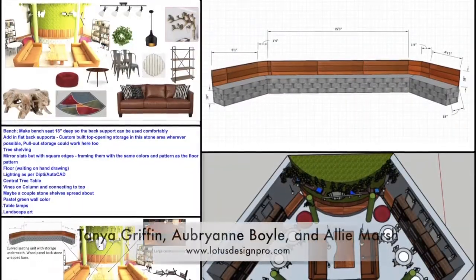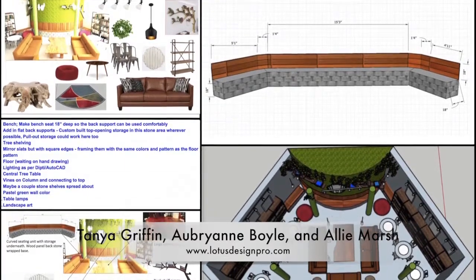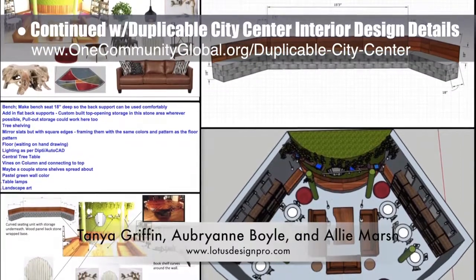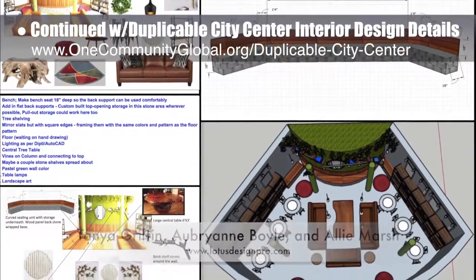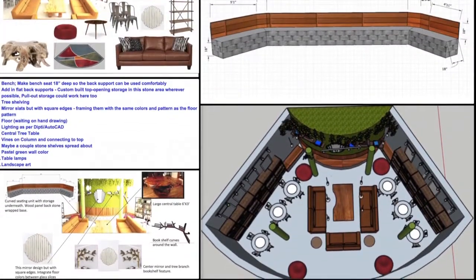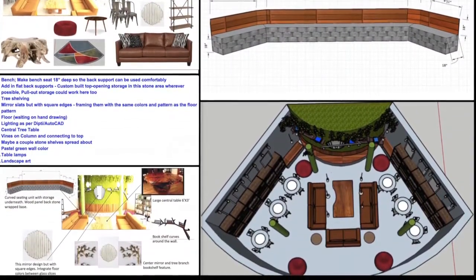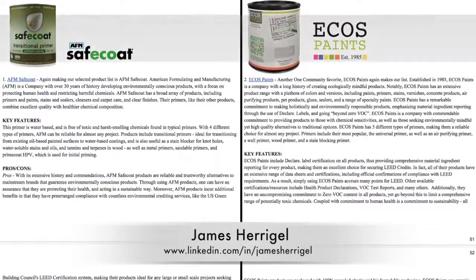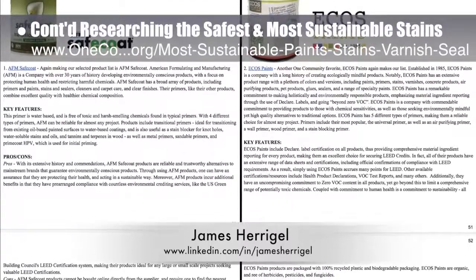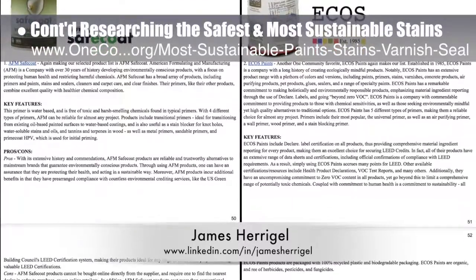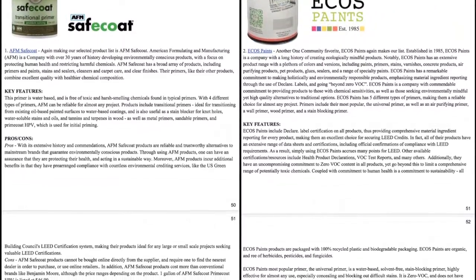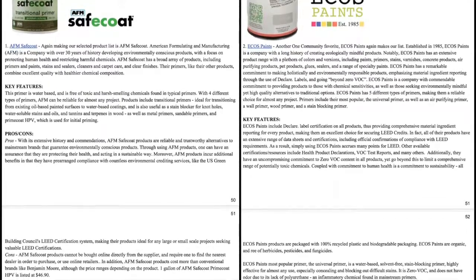Tanya Griffin, Aubrey Ann Boyle, and Ali Marsh, interior designers from Lotus Designs, completed their 8th week helping with the duplicable city center interior design details. This week's focus was finishing concept boards that outline, highlight, and summarize the total space. James Harigal, student researcher, completed his 11th week researching the best, safest, and most sustainable paints, primers, stains, and sealers — this week focusing on another round of research and writing up details for the most sustainable stain options.